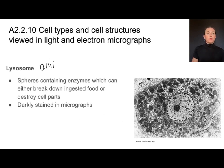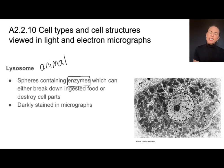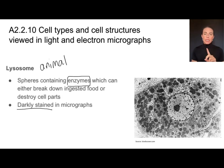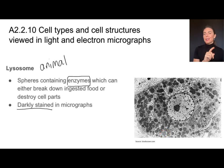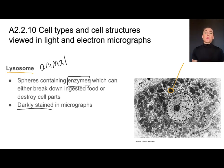Lysosomes are something I look for particularly in animal cells. These are little spheres that contain enzymes — they are enzyme sacks and can be used to digest food or destroy old cell parts. They become very darkly stained in micrographs. In this animal cell micrograph I see a lot of spheres, but not ones that are lightly stained with little squiggly marks inside. When looking for a lysosome, I want a very darkly stained sack that is round with no other structures visible within it.